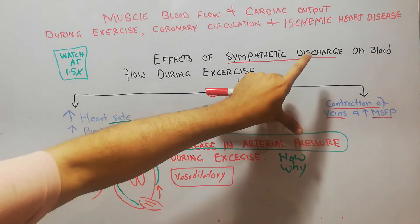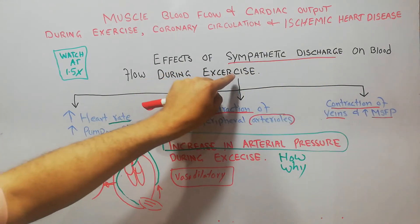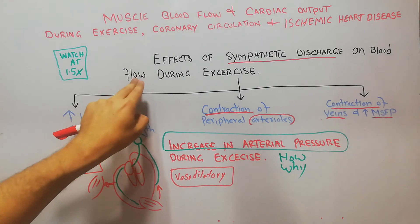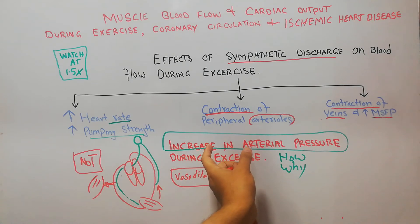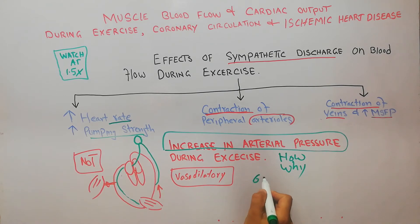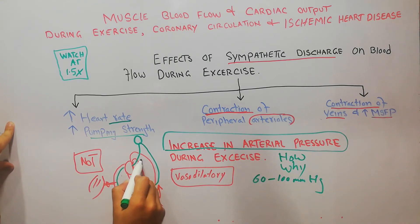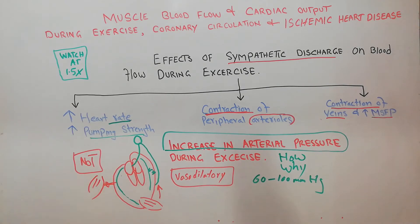All these factors due to sympathetic nerve activation or sympathetic discharge during exercise not only increase blood flow to the exercising muscles, but also increase the arterial pressure. Normally the arterial pressure is around 60 to 100 millimeters of mercury — it is the pressure that the blood puts on the walls of the arteries.